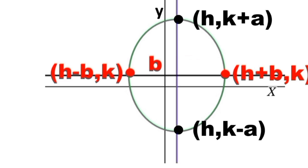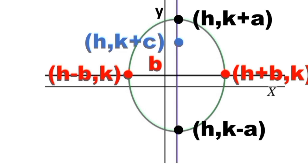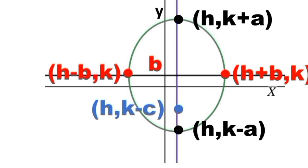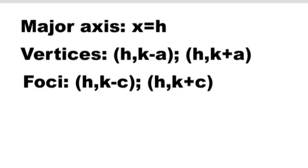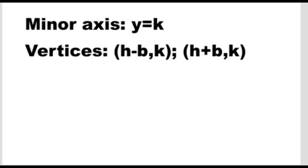The upper focus has coordinates (H, K plus C), and the lower focus has coordinates (H, K minus C). For an ellipse with center not at the origin and major axis parallel to the Y axis: the major axis equation is X equals H, the two vertices on the major axis are at (H, K minus A) and (H, K plus A), and the two foci are at (H, K minus C) and (H, K plus C). The minor axis has equation Y equals K, and the vertices on the left and right are at (H minus B, K) and (H plus B, K).